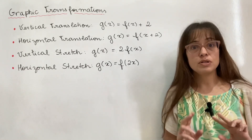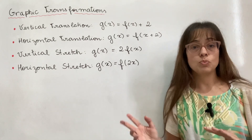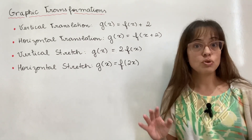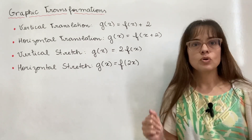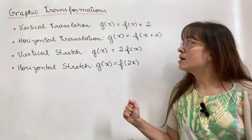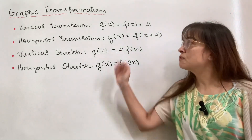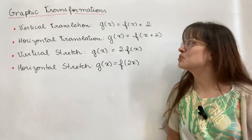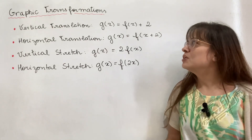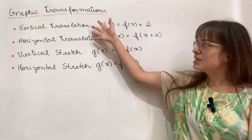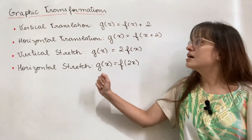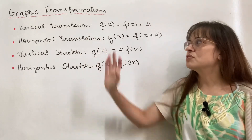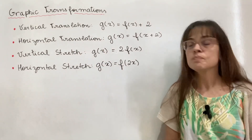I'm going to explain it in two different ways and then ask you which one is your favorite. So here I have the four basic types of graphic transformations. You have translations and stretches, and both of those can be either vertical or horizontal.